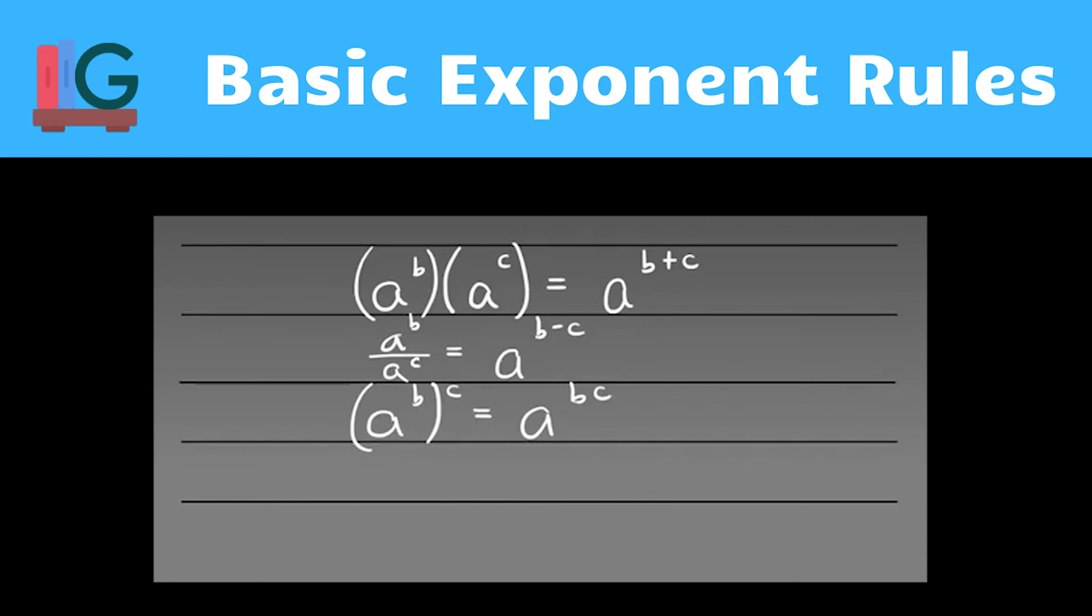Similarly, there's the opposite rule to that, which is saying that if I had a to the b and instead of raising it to a power, I'm going to go ahead and take a radical of it. I'm going to take a root of it. Well, that's a to the b and all of that is to the c root.